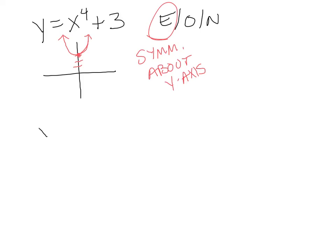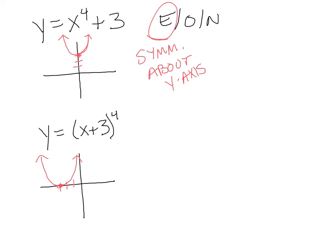Now let's look at y = (x + 3)⁴. This one is a little different — it has a transformation where it's been shifted 3 to the left, giving a flattened parabola shape offset from center. In this case, it is not even and it is not odd — it's neither. Even though the power is even, it's not symmetric about the y-axis, which is what makes it even. So in this case, it's neither.